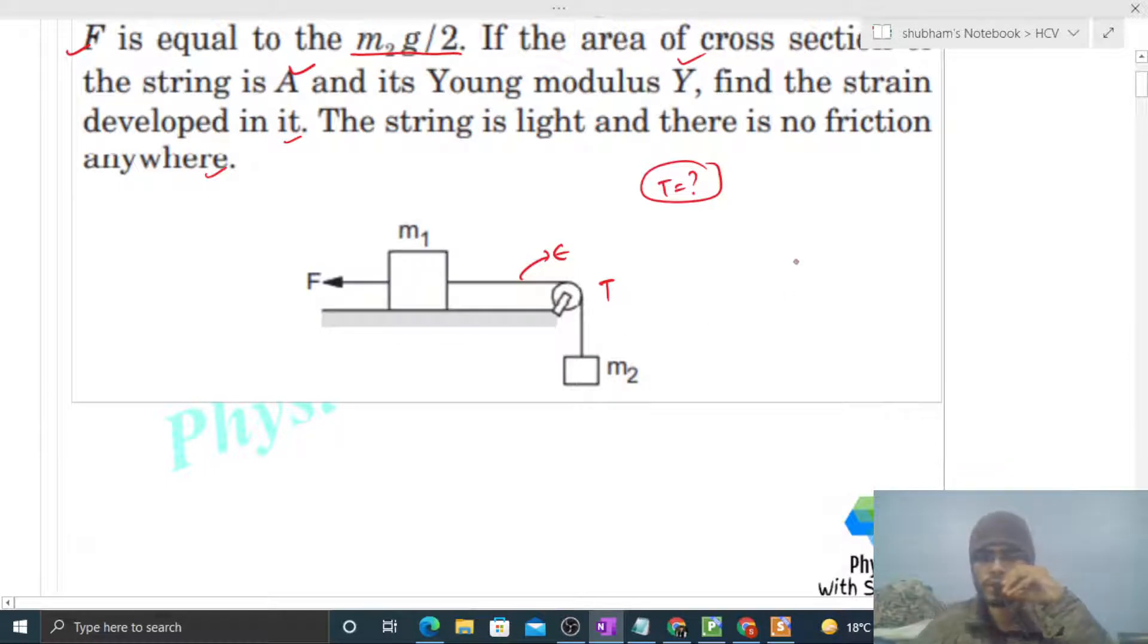We need to draw the free body diagram. You can see, this is m1 and this is m2. For m2, downward direction m2g acts as weight, and upward direction tension acts. For m1, forward direction tension acts, backward direction this force F with value m2g divided by 2. And in the vertical direction m1g will be balanced from the normal reaction from this surface.